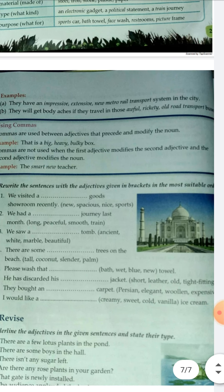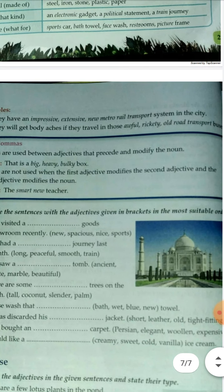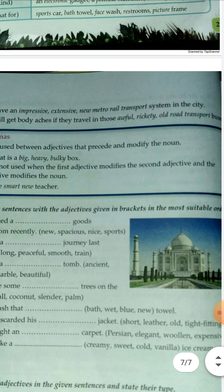Here is a full example: 'They have an impressive extensive new metro rail transport system.' Here, 'impressive' is the opinion, 'extensive' is the size, 'new' is the age, and 'metro' is the type — all preceding the noun. Another example: 'They travel in those awful rickety old road transport.' This shows how multiple adjectives should be ordered before a noun.